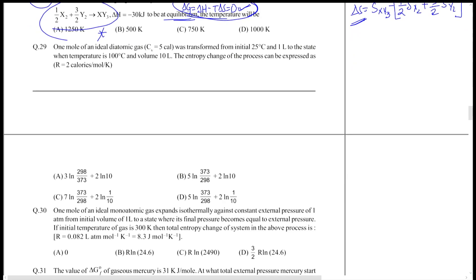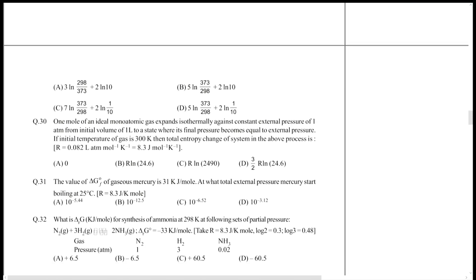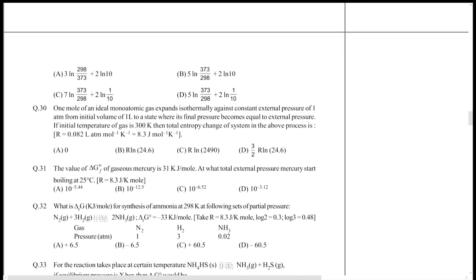The next is question number 30. One mole of an ideal monatomic gas expands isothermally, with an initial volume of one liter and a final pressure of one atm.